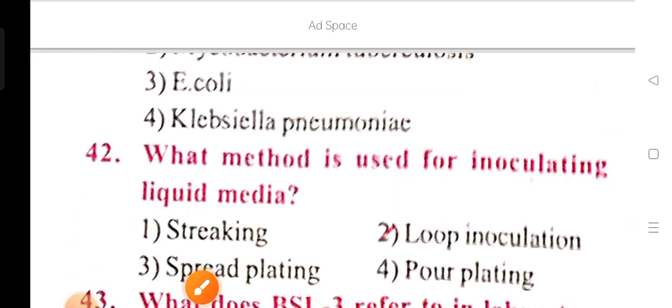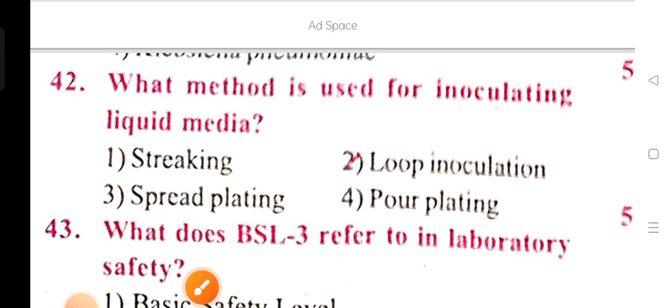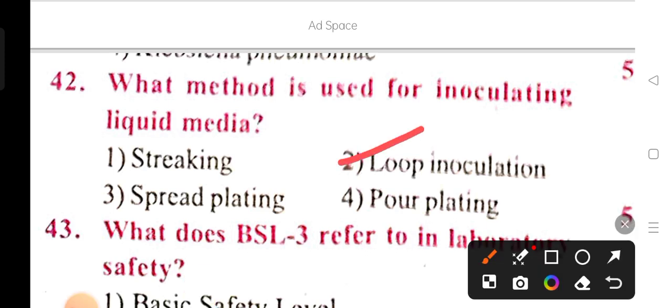Next question: What method is used for inoculating liquid media? The options are streaking, loop inoculation, spread plating, and pour plating. Option 2 is the correct answer: loop inoculation. This type of method is used for inoculating liquid media. Loop inoculation is used for the inoculating liquid media.